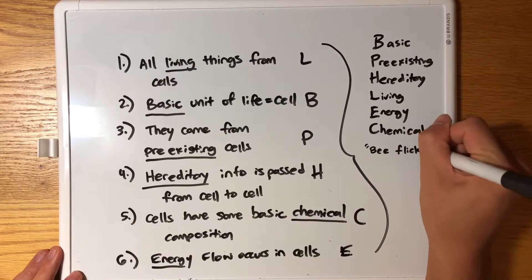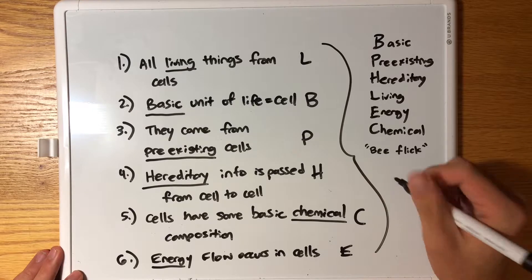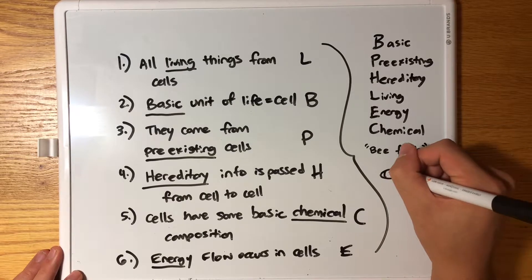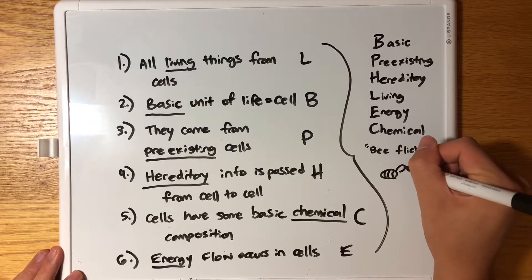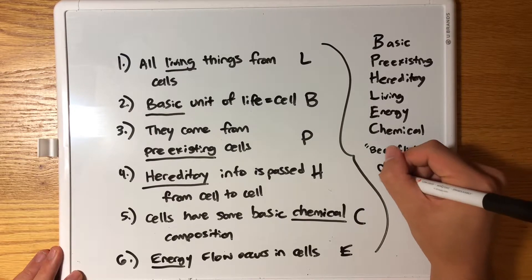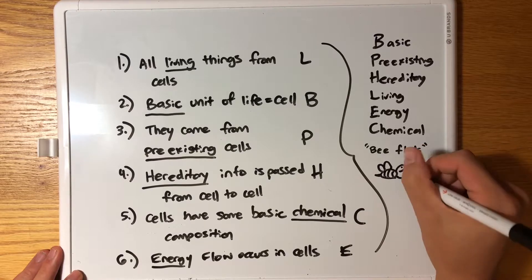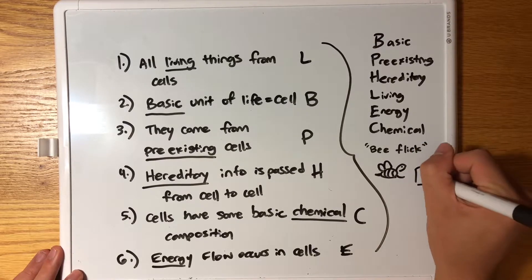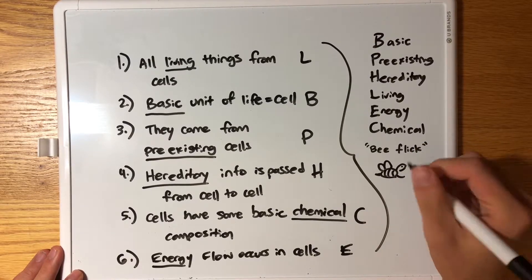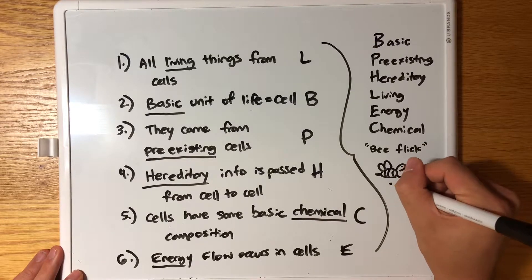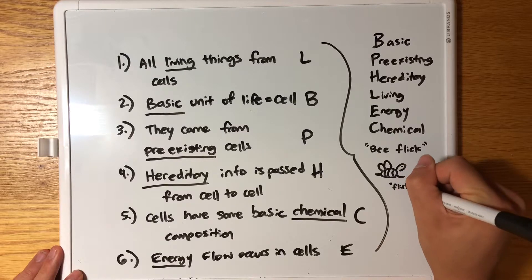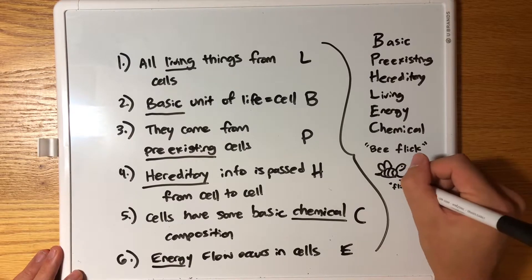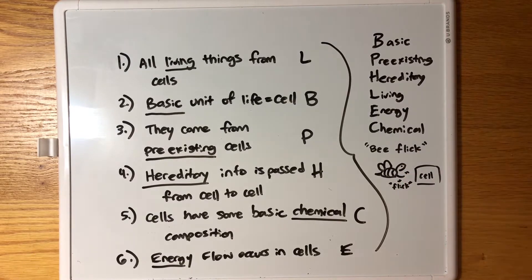As all mnemonics need a picture, I thought maybe 'B Flick' — just a little picture of a bee flicking a cell. So there's your mnemonic for the cell theory.